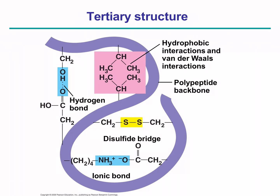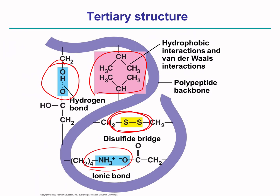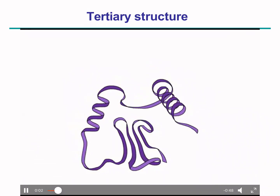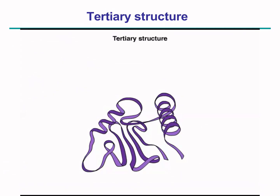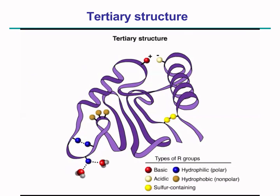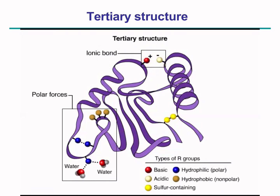The tertiary structure is mainly an outcome of the R groups and how these R groups interact with each other. They can have simple hydrophobic van der Waals interactions, they can have hydrogen bonds, ionic bonds, or even covalent bonds due to disulfide bridges. This tertiary structure is above the secondary structure — the alpha helices and the beta pleated sheets — where the different kinds of amino acid R groups, when they come into close proximity with each other, can give rise to different outcomes: an ionic bond between a basic and an acidic amino acid, polar forces giving rise to hydrogen bonds, or hydrogen bonding with the water surrounding the protein. In addition, you can have bondings that come up due to covalent bonding via the disulfide bridges.